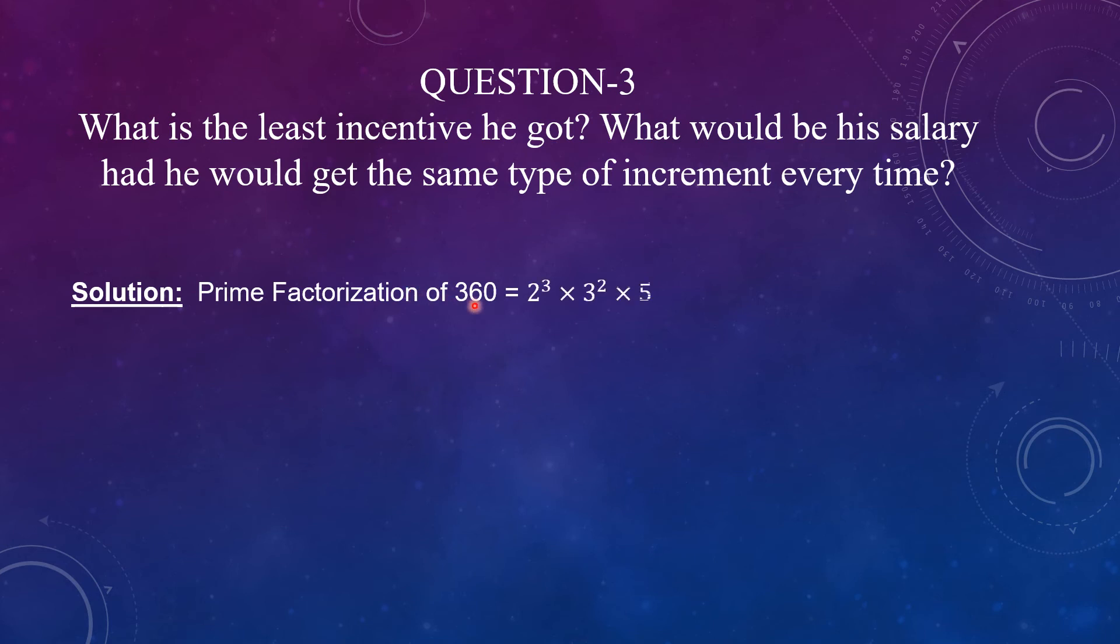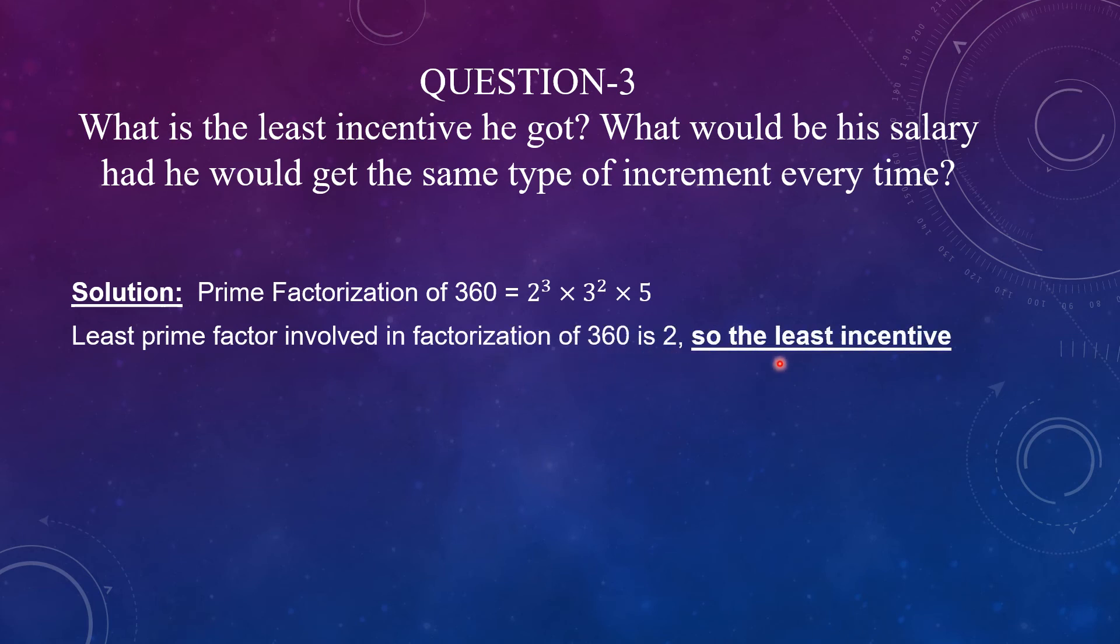The prime factorization of 360 is 2 raised to the power 3 and 3 raised to the power 2 into 5. With the same concept, we can find out the least increment. So, we can see that 2z, 2z and 2z increment has happened 3 times. So, this is the least increment. We can say least prime factor involved in the prime factorization is 2. So, the least incentive he got is 2 zeds.